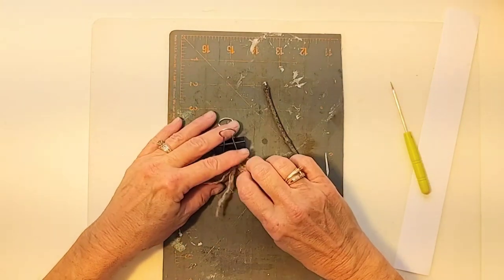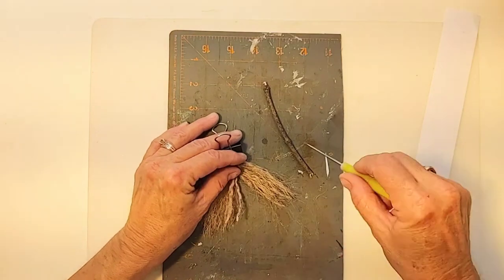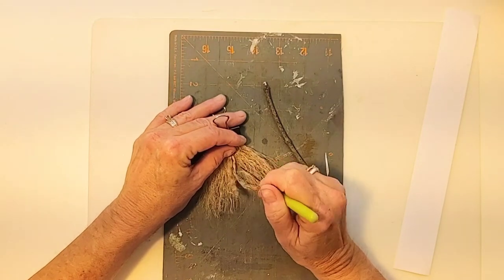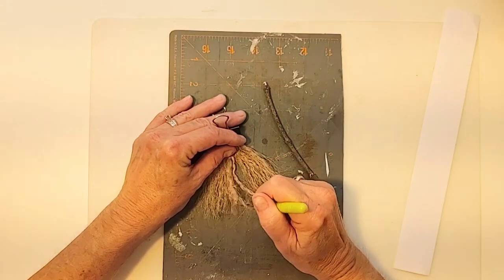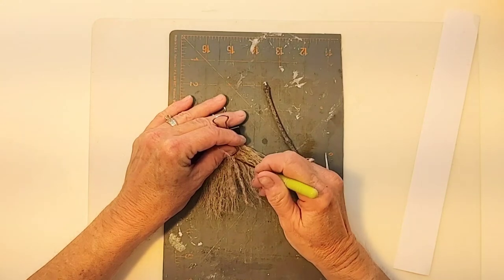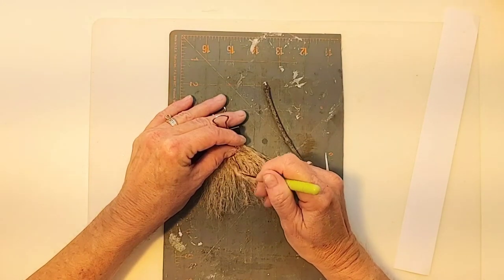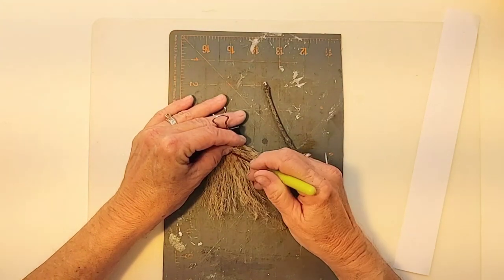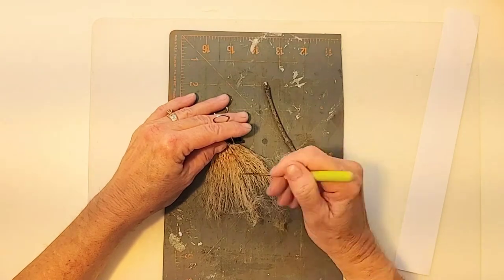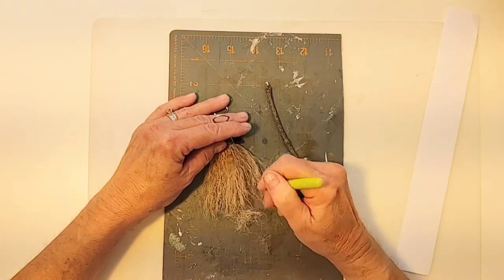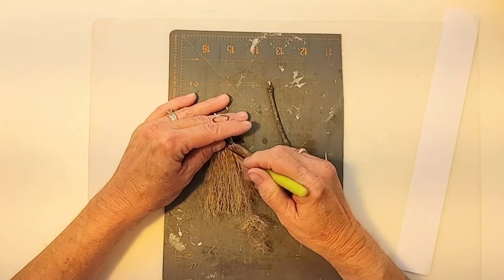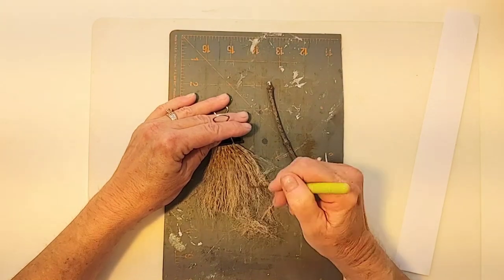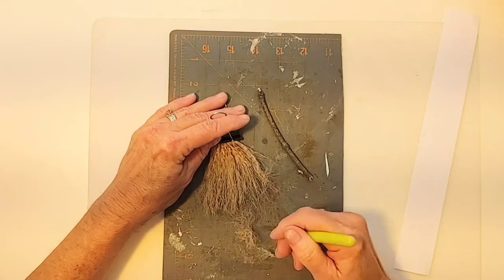So what I do to get this apart is I just put it all on the binder clip to hold it all together. And then I just start raking through it with my pokey tool. Now I suppose if you had a real fine comb that would work as well. But you know I can't be bothered to get up and go searching for things. I get an idea and I want to just go crazy with it. So basically that's it. Just get it till it's all fuzzed out like that.